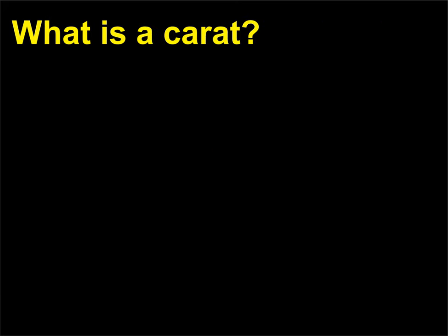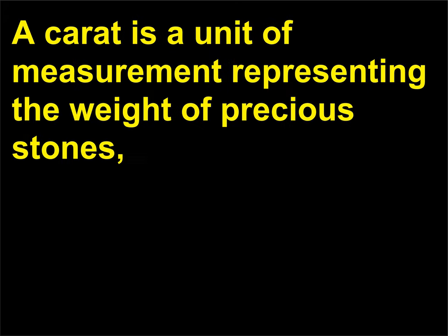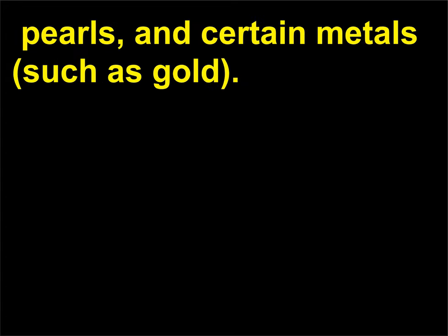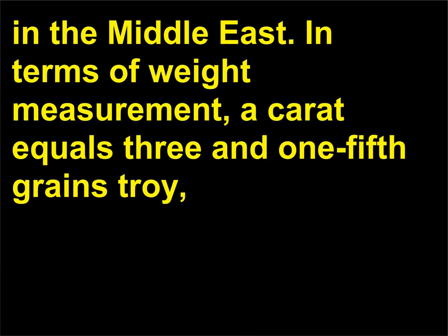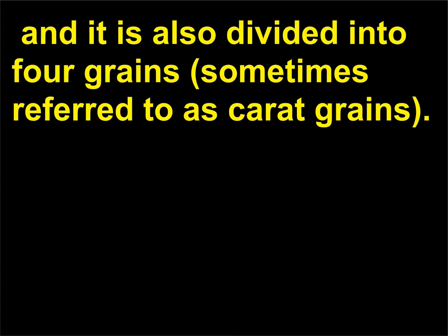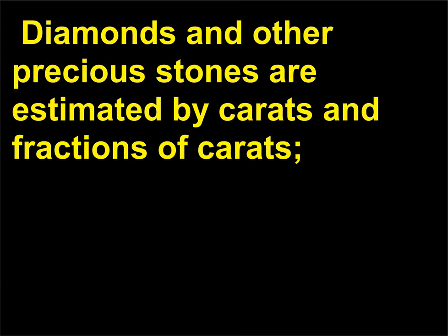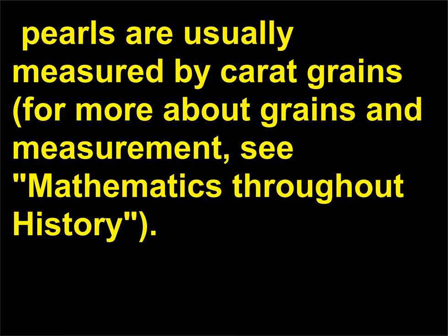What is a carat? A carat is a unit of measurement representing the weight of precious stones, pearls, and certain metals, such as gold. It was originally a unit of mass based on the carob seed or bean used by ancient merchants in the Middle East. In terms of weight measurement, a carat equals three and one-fifth grains troy, and it is also divided into four grains, sometimes referred to as carat grains. Diamonds and other precious stones are estimated by carats and fractions of carats. Pearls are usually measured by carat grains.